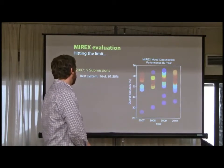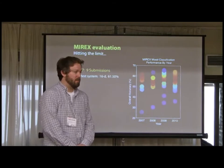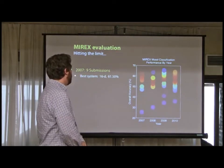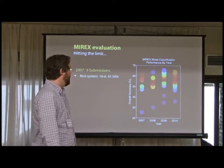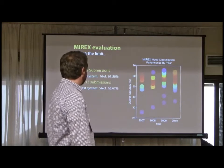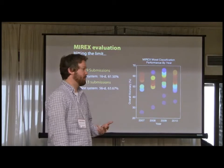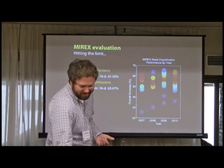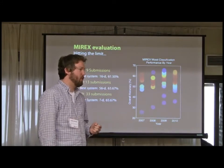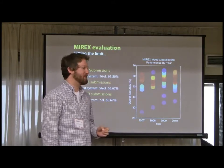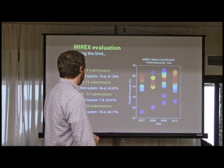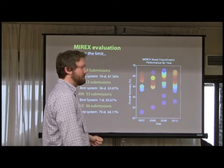The MIREX competition is really the best example of this. The first system in 2007 that was the best was by George Tzanetakis, and he just used MFCC and spectral shape — about 16 dimensions total. In 2008, we went up to 56 dimensions, introducing feature selection and dimensionality reduction, going from 61 to 63. In 2009, someone got up to 65. And just in 2010, someone had 70 with sophisticated feature selection — and again, really hardly any better than George was with a pretty simple approach.